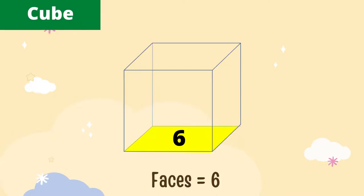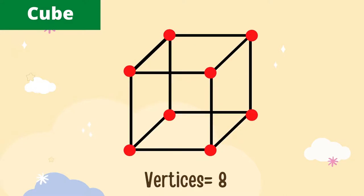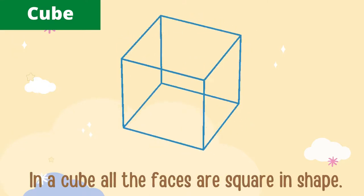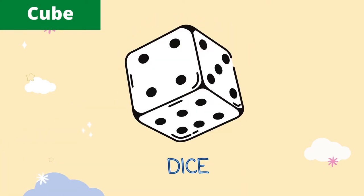A cube has six faces, 12 edges, and 8 vertices. In a cube, all the faces are square in shape. For example, a cube-shaped...